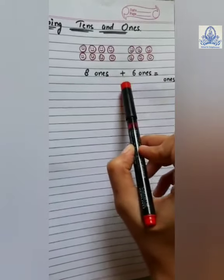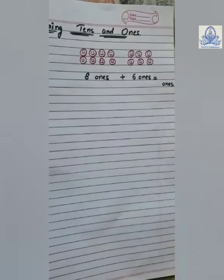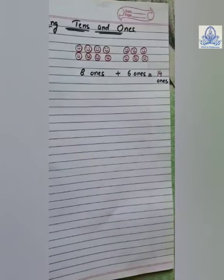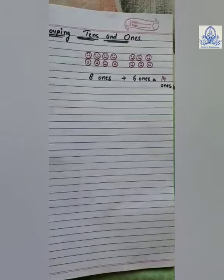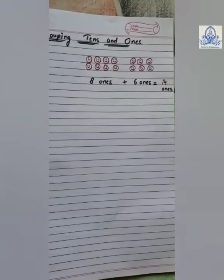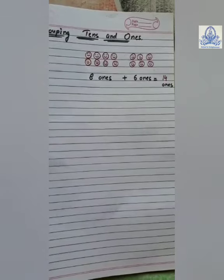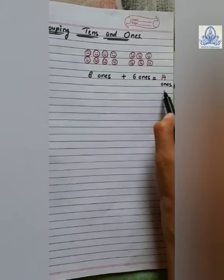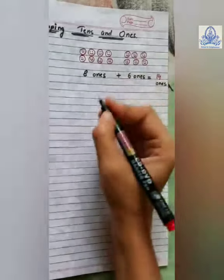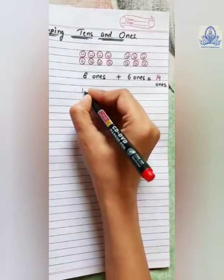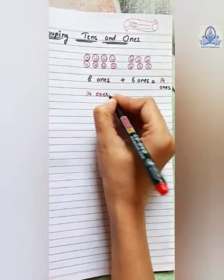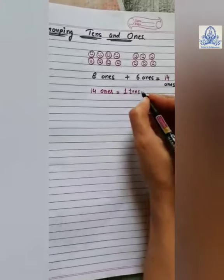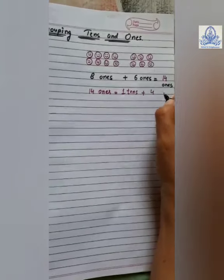Eight ones plus six ones equals how many ones? Fourteen ones. So, fourteen ones means a two-digit number and we cannot write a two-digit number at the ones place. Fourteen ones equals one ten plus four ones.